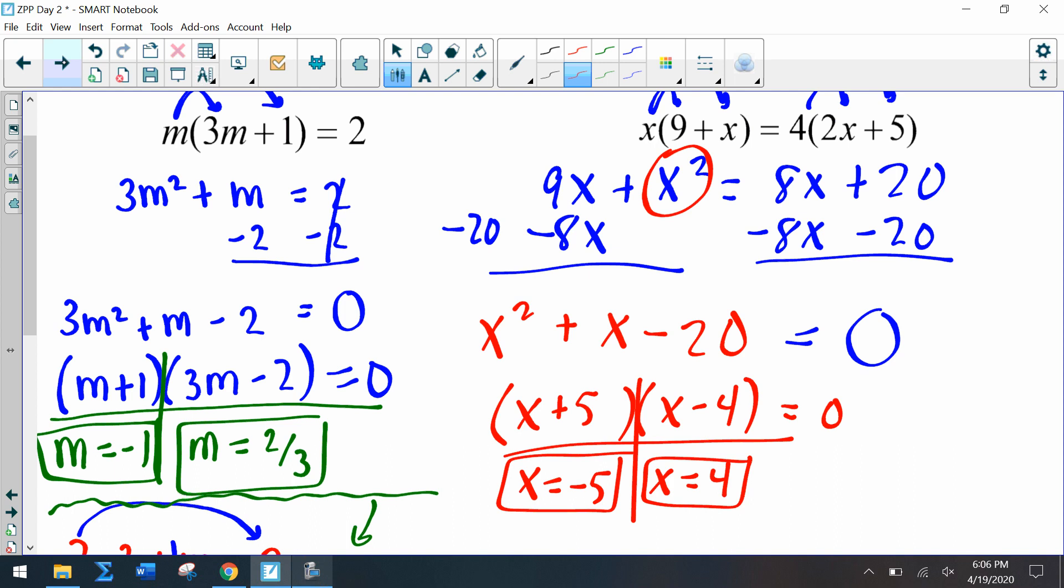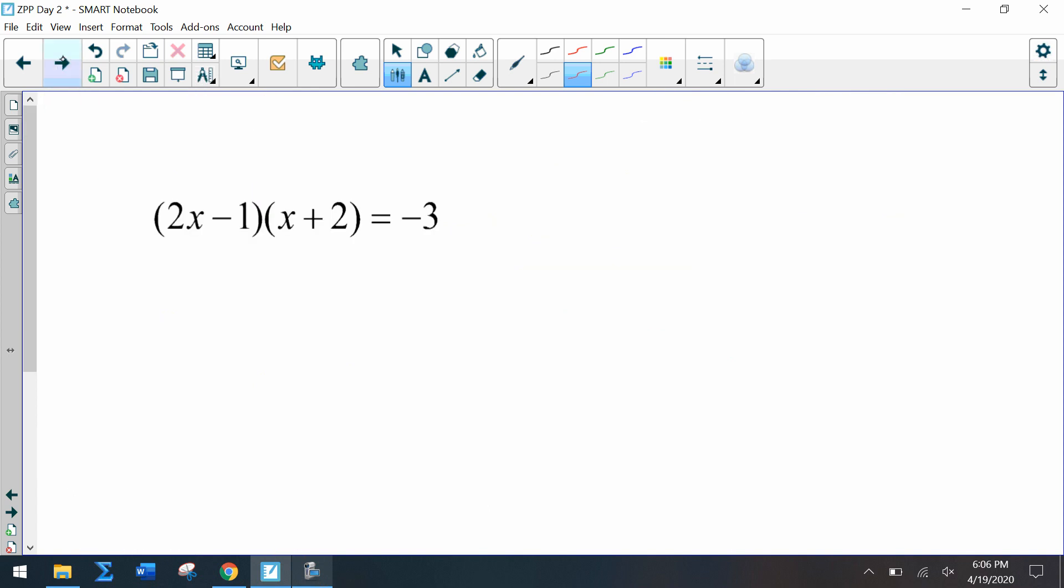So there's a bit more work involved in these particular problems, but again same thing, rearrange into standard form. So this one's a little tricky because doesn't it look like it's factored on the left? Doesn't this look like it's factored? But this number is not zero, we have negative three. So remember, in order to use the zero product property, we need to set factors equal to zero.